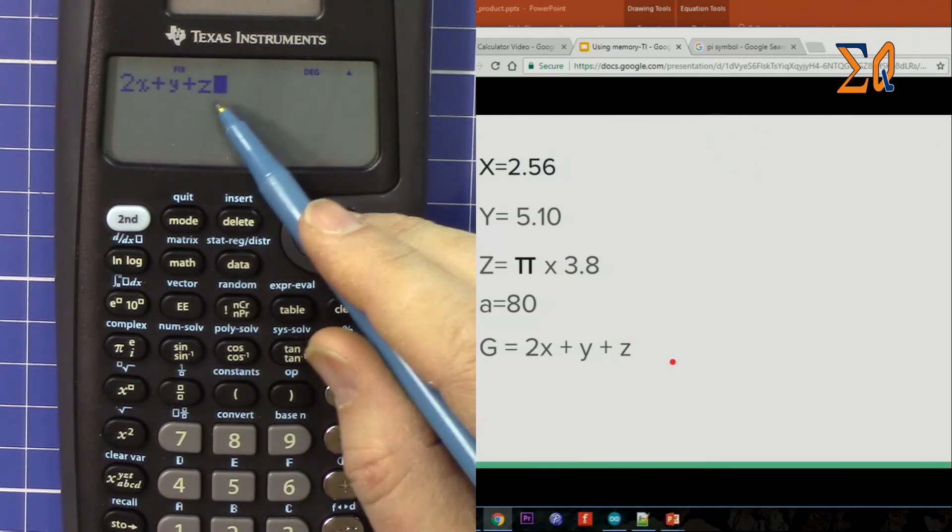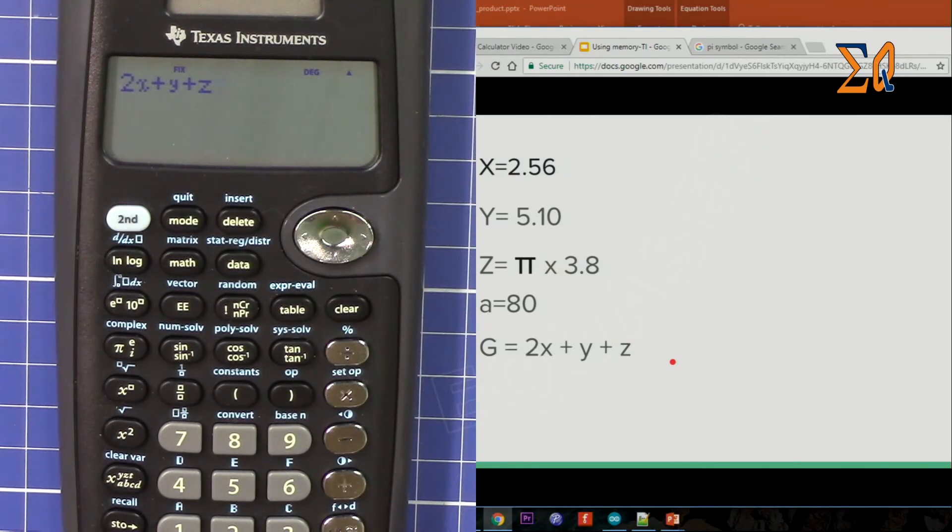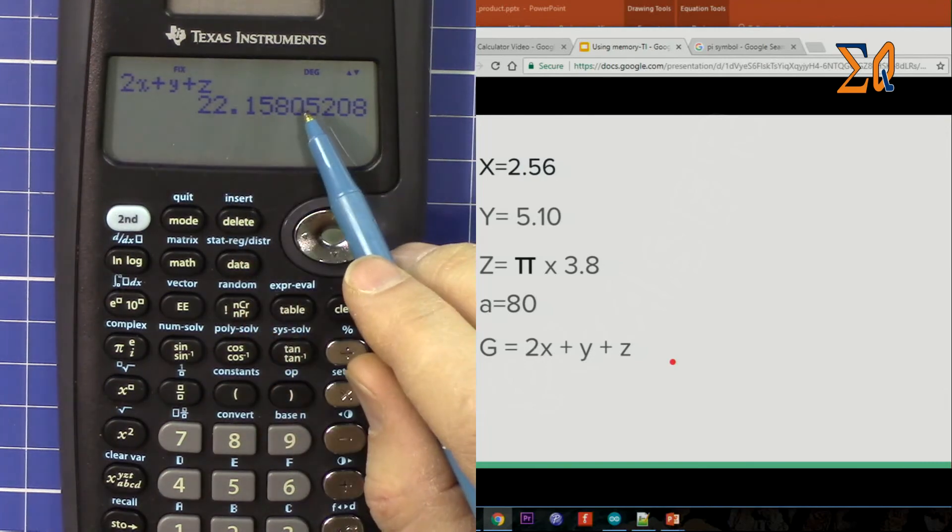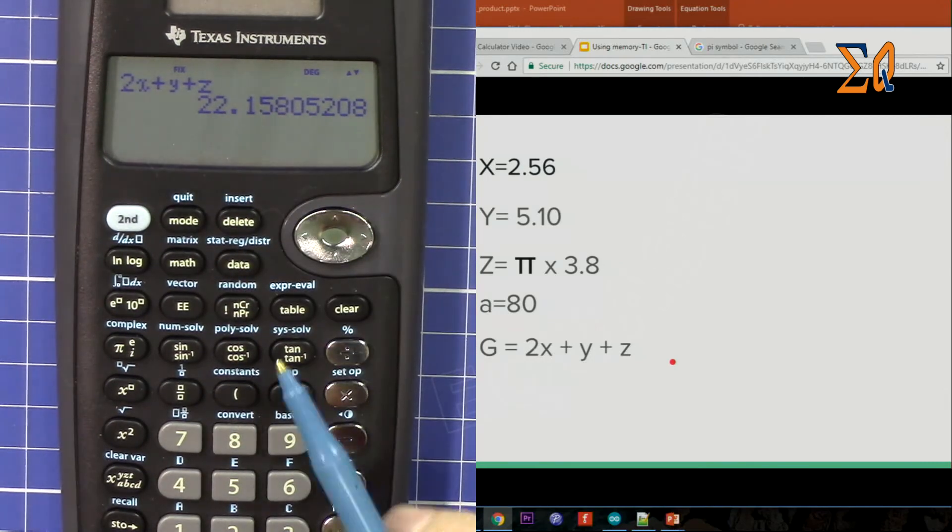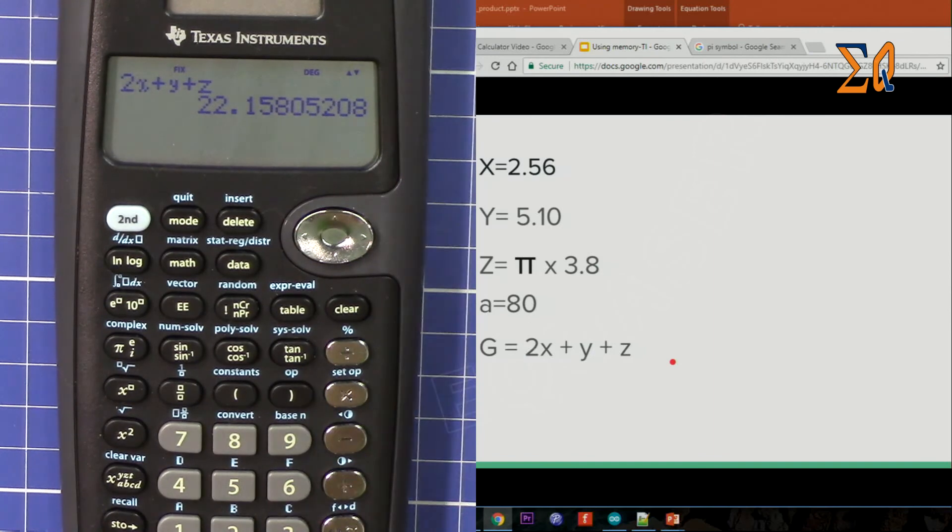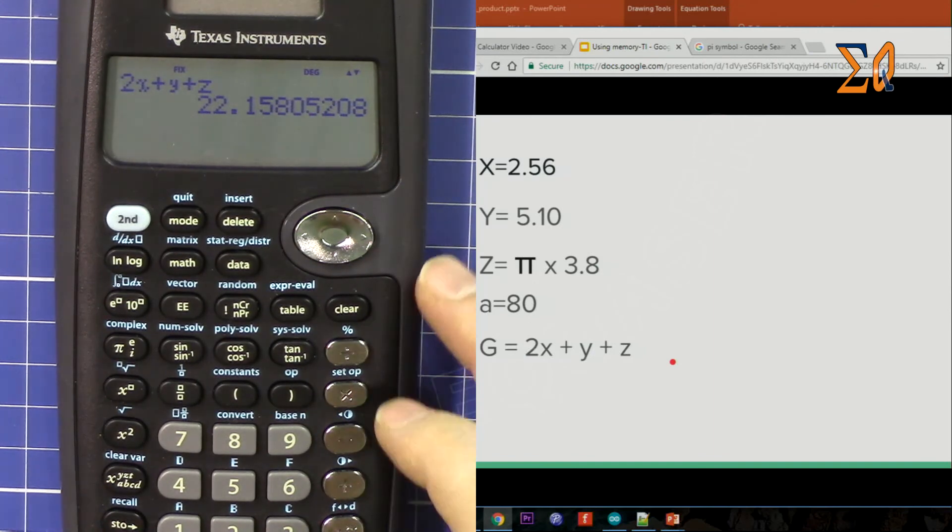Once you bring a variable here on the screen, it brings automatically the value with it. So that is the evaluated value for using the memory. That's it, thank you for watching.